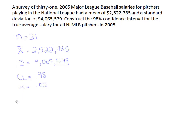Our next step after copying down all the information from the problem is to come up with the critical value. Because this sample size is over 30, I'm going to use Z alpha divided by 2 as my critical value. Alpha is 2%, so half of alpha is 0.01. Let's look up the 0.01 value on our t-table, where we can find the z-scores in the very last row under the column that says 0.01.